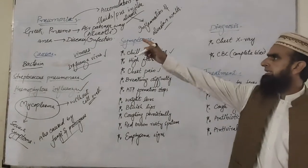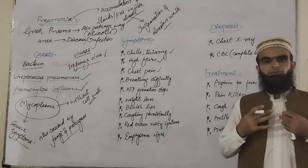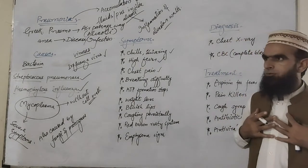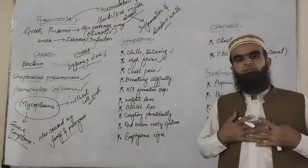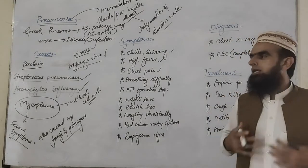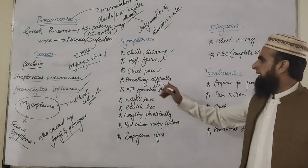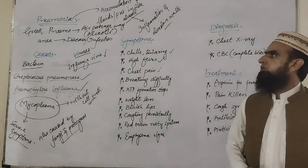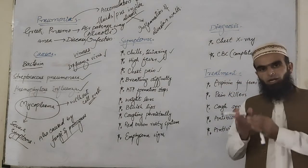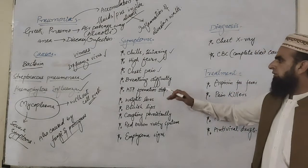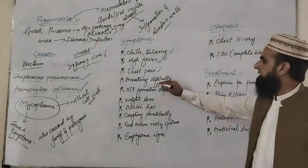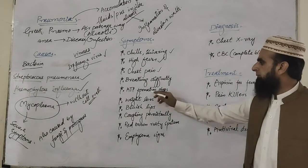Chest pain: in this condition, there is an attack of pneumonia on the lungs and alveolar portions, so a pain is felt in the chest cavity or chest wall — that is called chest pain. Breathing difficulty: due to pneumonia, there is difficulty in breathing. The patient cannot breathe properly. ATP formation stops or is reduced because of the reduction in the exchange of gases.